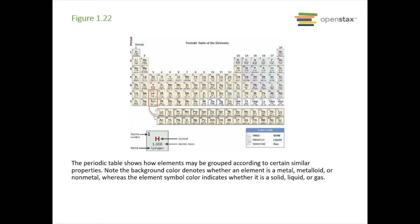We'll talk more about the periodic table in chapter two, but here it is. Elements are grouped according to similar properties, and colors indicate whether an element is a metal, metalloid, or nonmetal. The element symbol and color also tell us if it's a solid, liquid, or gas. The periodic table gives us a lot of information on the properties of different elements, and we'll discuss how to use it more later.